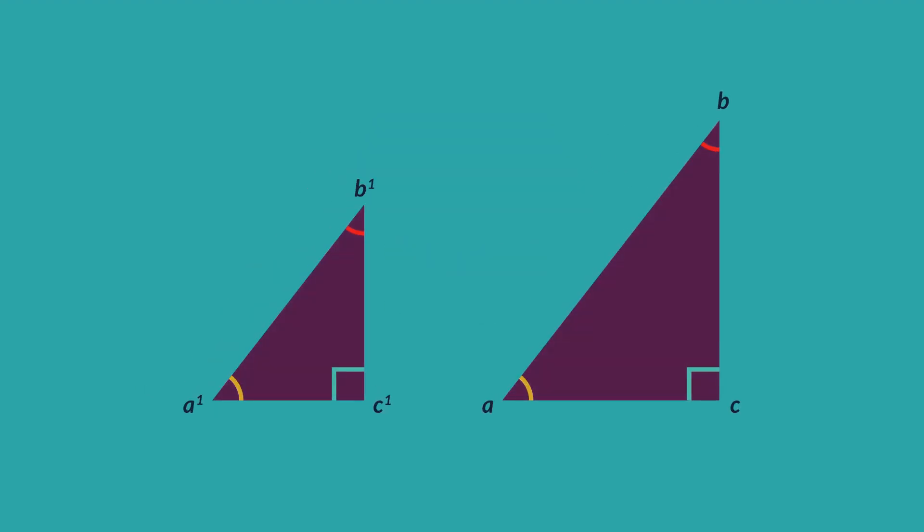These triangles are not congruent because although they have the same three angles, they are not exactly the same. The one on the right is larger.